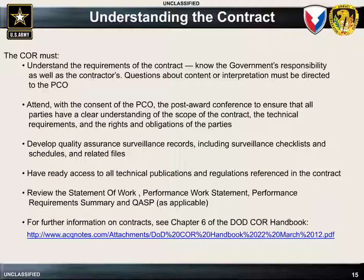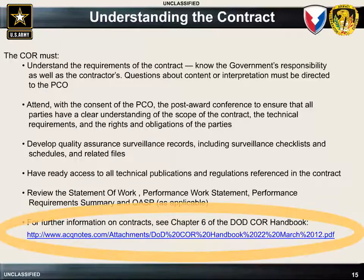It is important that the COR have a thorough understanding of the contract on which they will be assessing the contractor's performance. Understand what the contractor's responsibilities are, as well as those of the government. The COR should ensure that they have access to the contract and any related documentation, all of which should be available from the PCO. A detailed understanding of the contract requirements will facilitate the performance of the COR's duties. For further information on contracts, including the different contract types, see Chapter 6 of the DOD COR Handbook at the address listed on the slide.